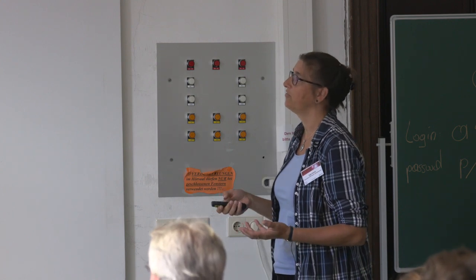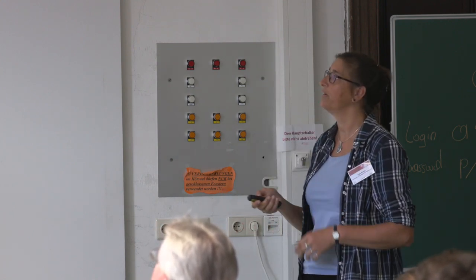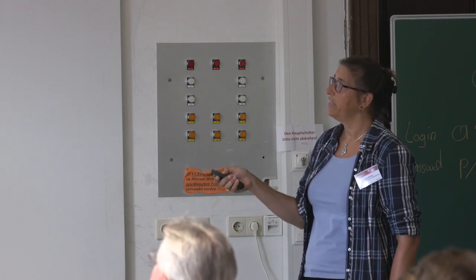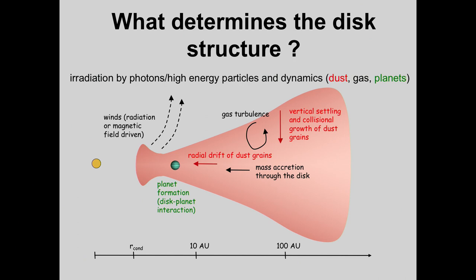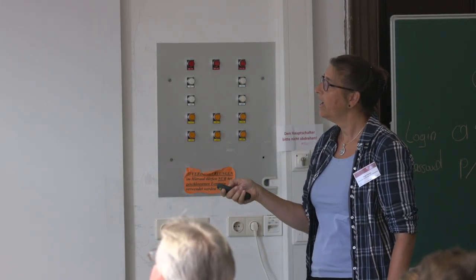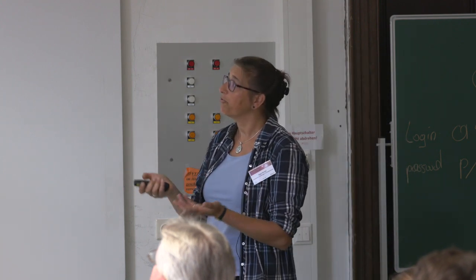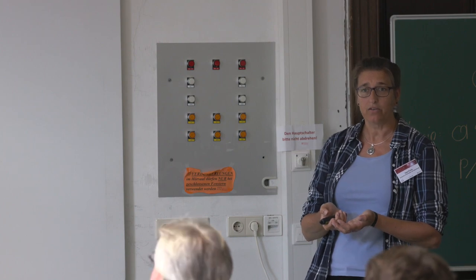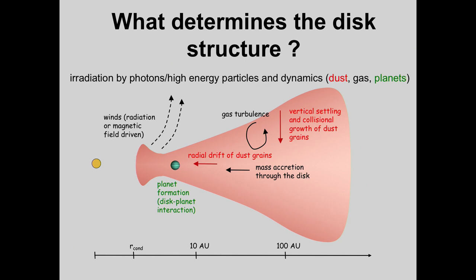We still do not fully understand how angular momentum is lost or how accretion happens. There may be winds originating from radiation or magnetic fields in the inner disk. The gas can be turbulent — probably at very low levels — causing some stirring and mixing. Planets, if massive like a Jupiter, will have a profound impact on the disk: they can open gaps and prevent dust flows from crossing their formation site, producing many of the structures we observe.